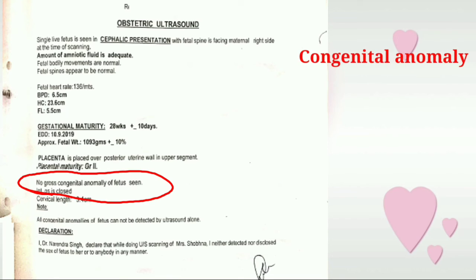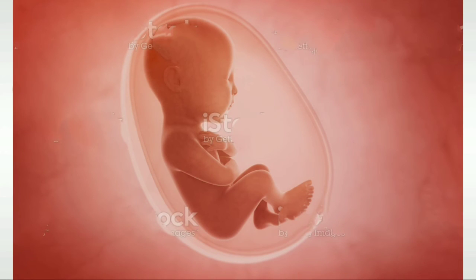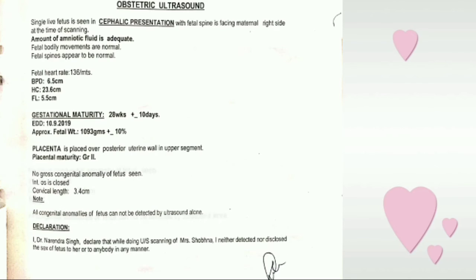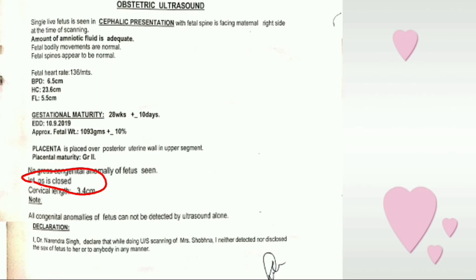The next line is about congenital anomalies, which are not seen in the baby. A congenital anomaly is a type of defect in the baby — either a birth defect, a functional defect, or a structural defect. A functional defect is a defect in the functioning of any body part like lungs, kidney, brain, or heart. A structural defect is a defect in hands, legs, or any body part that has not developed properly. This is called a congenital anomaly, and it is not seen in my case.